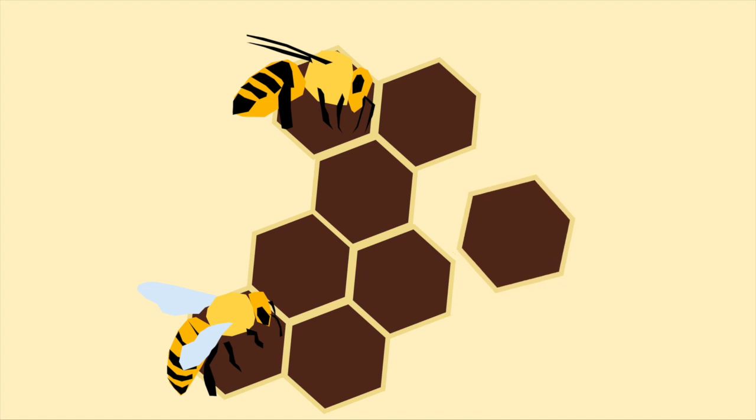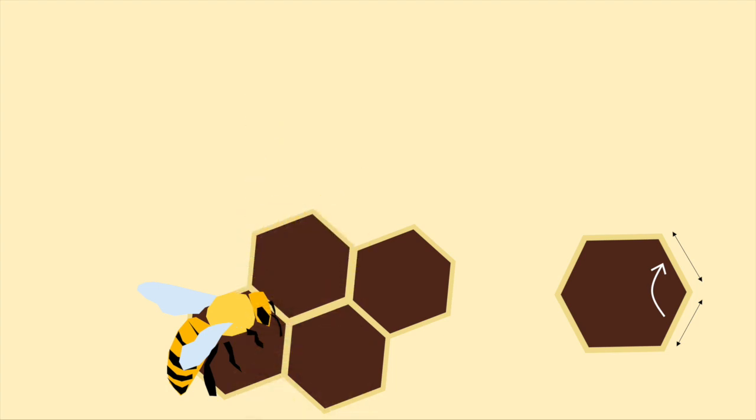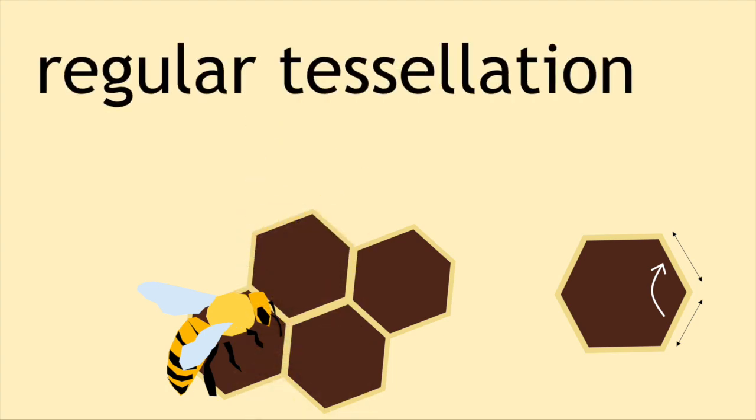Since the hexagons used are also regular, with the same angles and same side lengths, we refer to this kind of tessellation as a regular tessellation, i.e. a tessellation that uses a single regular polygon.